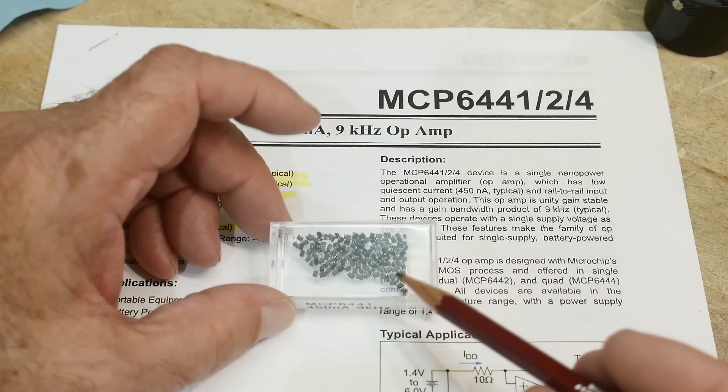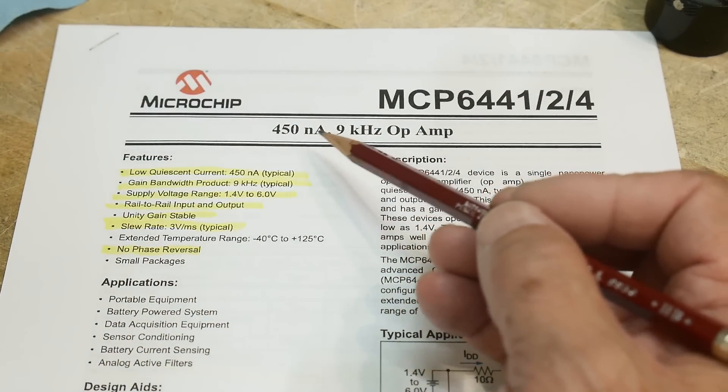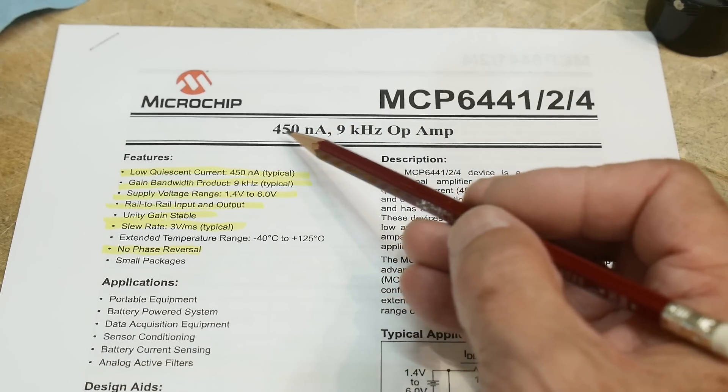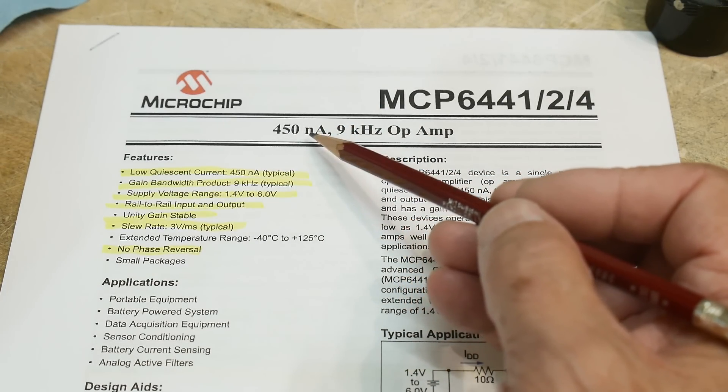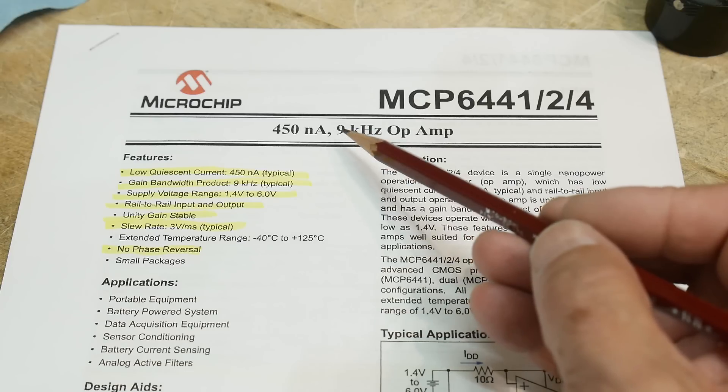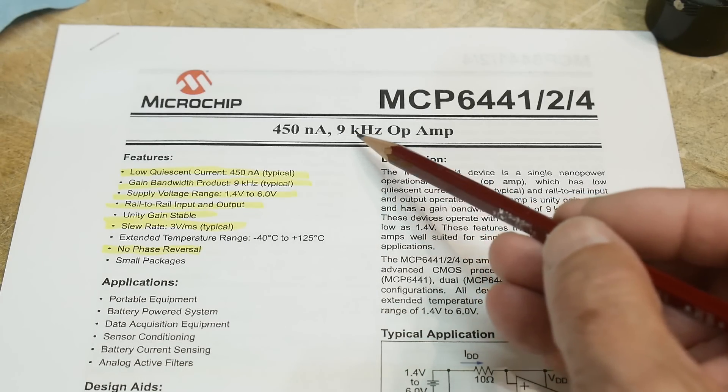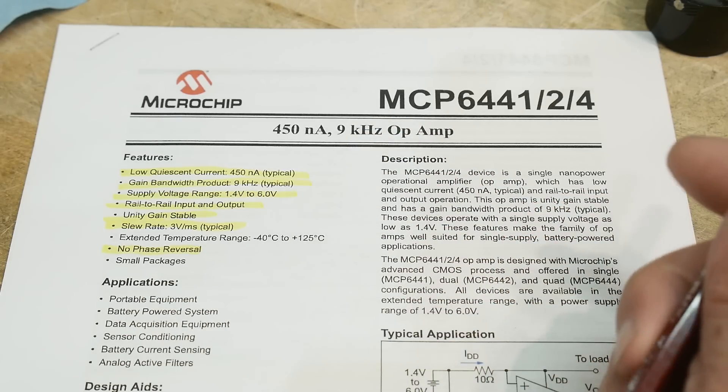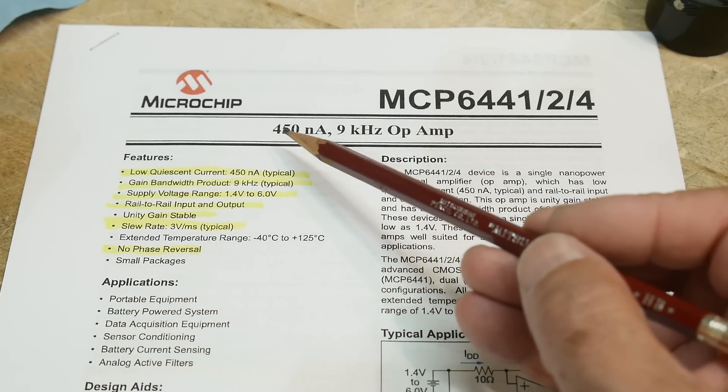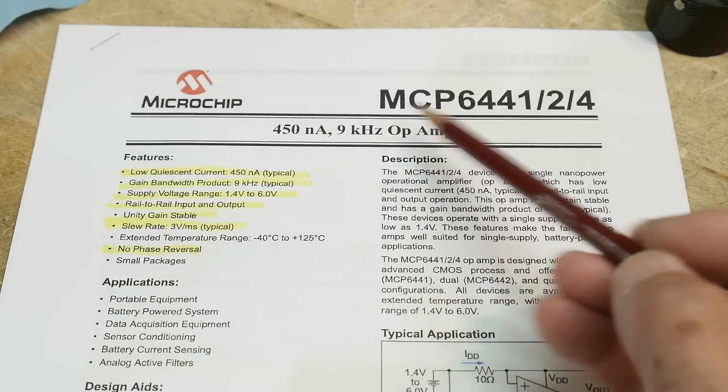They look like an SOT but they're smaller. Look at its claim to fame though, it's 450 nanoamps of standby current, nanoamps. And 9 kilohertz, so that's the speed, that's the open bandwidth of this thing is 9 kilohertz. So obviously not for fast applications but for very very low current applications.